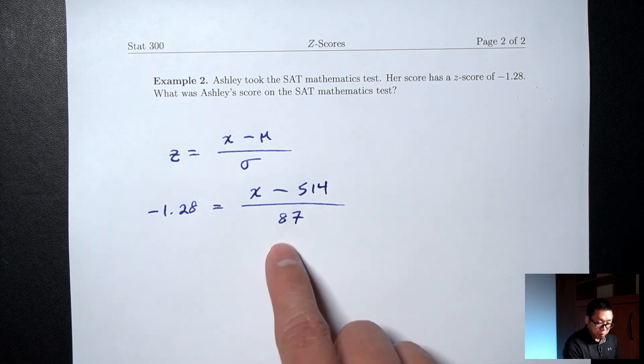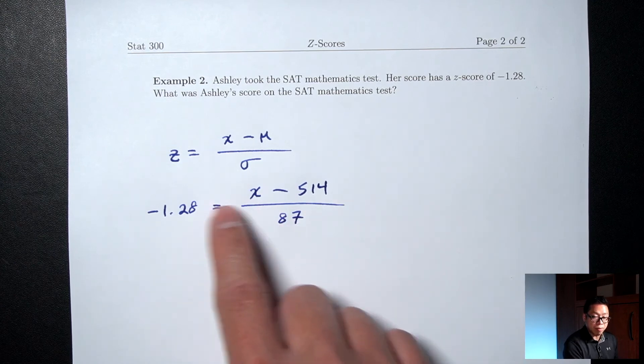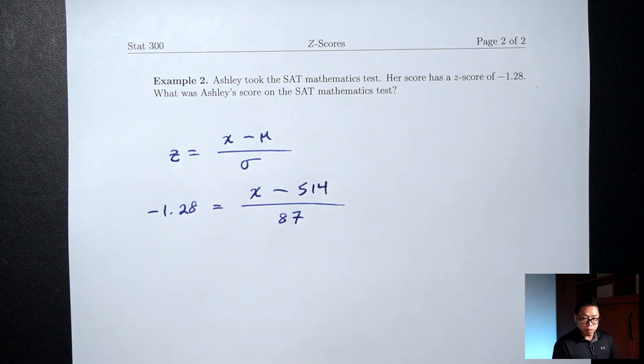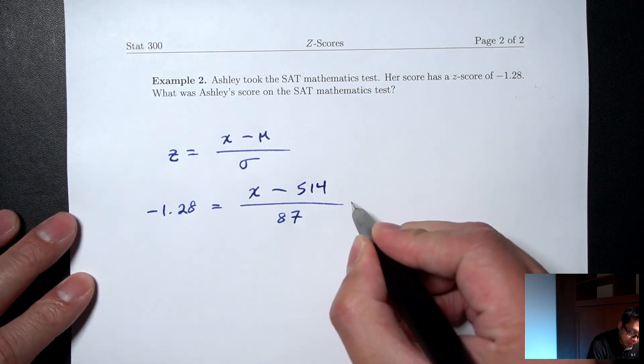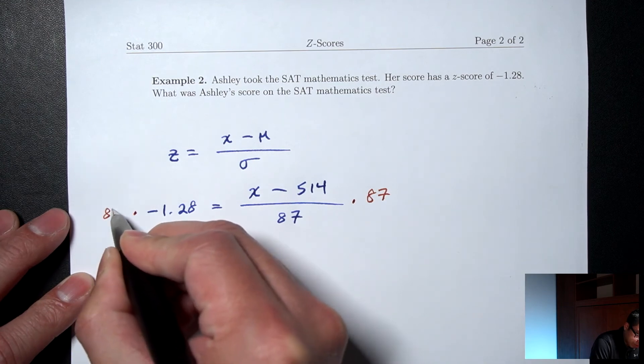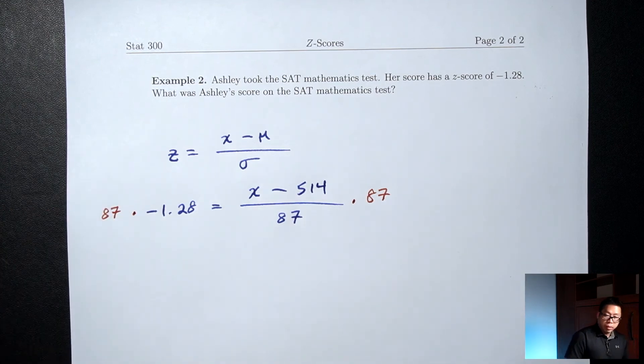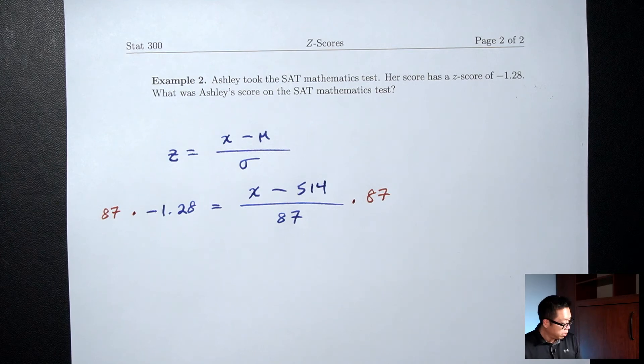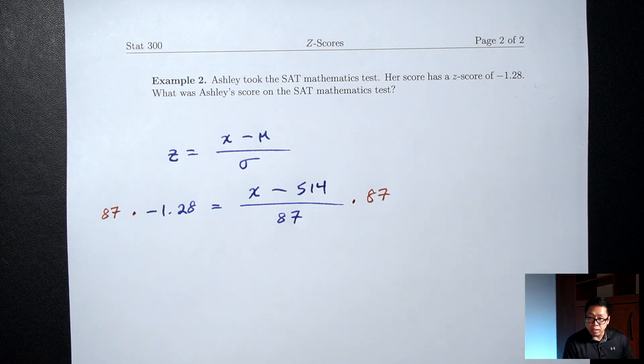Right now it's on the bottom, so right now the 87 is dividing. To undo a division, you're going to multiply. So we're going to multiply both sides by 87. So on the left side, 87 times negative 1.28, we get negative 111.36.